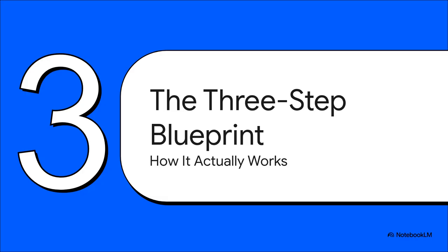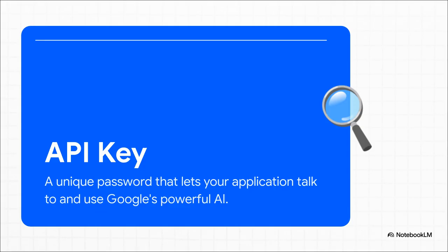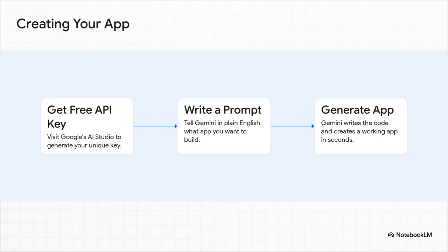So the big question is, how did this all actually work? You're probably picturing this super complicated, technical setup that takes days — nope. The real genius was just how simple it was. The entire process boiled down to just three super simple steps. But before we jump into those steps, there's just one little techie thing we gotta cover: the API key. Don't let the name freak you out. The best way to think of it is like a unique password, or even better, like a secret handshake. It's how your app proves to Google, 'Hey, I'm allowed to talk to your AI.' And once you had that secret handshake, the rest was shockingly simple.